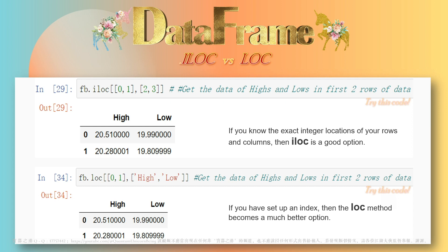Maybe you are thinking: which index tool should I use, .loc or .iloc? Well, it depends. If you know the exact integer locations of your rows and columns, then .iloc is a good option. If you haven't set an index yet using set_index, you can still use the .loc method to identify columns by name, but you will have to use integer locations to identify the rows. If you have set up an index, then the .loc method becomes a much better option. Ultimately, it depends on how your data are structured and what you are trying to do. I recommend learning and practicing both methods so you understand when to use each one.